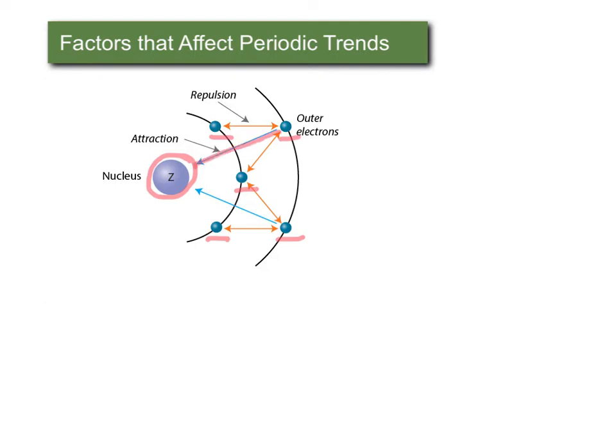But it's also going to feel repulsion, represented by the orange arrows, between itself and the electrons in between. This is sort of like a game of tug of war, where the nucleus is pulling the outer electron in toward it. But in addition to using force to pull it in, there are other forces pushing the electron back out at the same time.